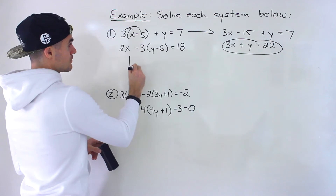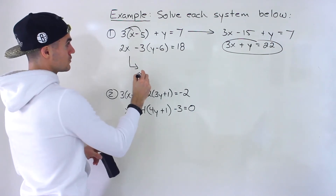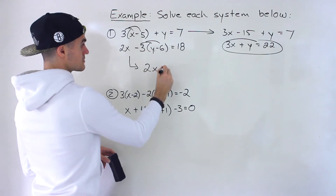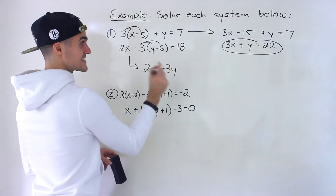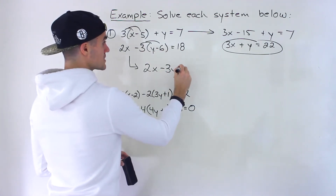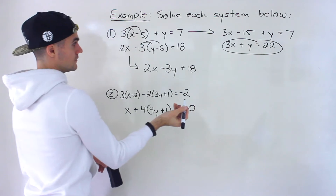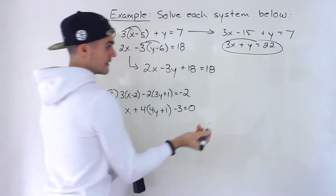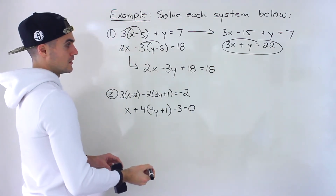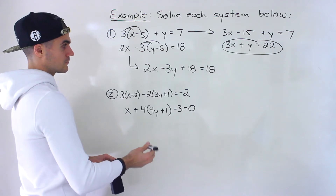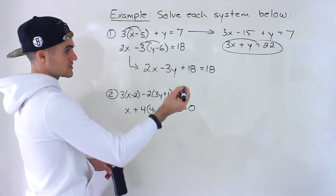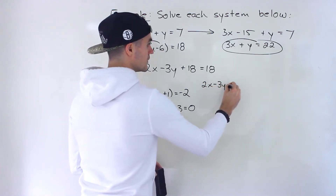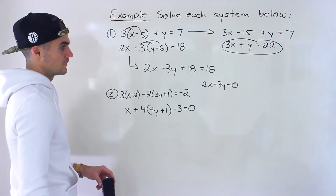For the second equation, same thing — I'm going to rewrite and distribute the negative 3. So we'll have 2x, then negative 3 times y gives minus 3y, and negative 3 times negative 6 gives positive 18. Negative times negative is positive. So we have 2x minus 3y plus 18 equals 18. When we bring the 18 over it cancels, leaving us with 2x minus 3y is equal to 0.